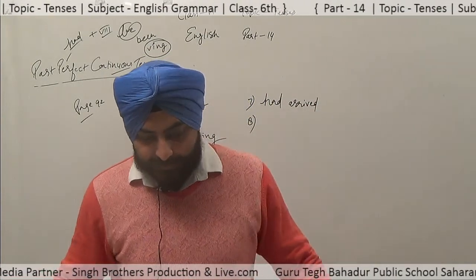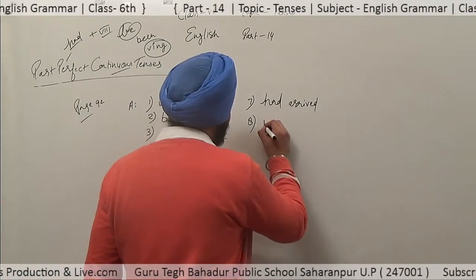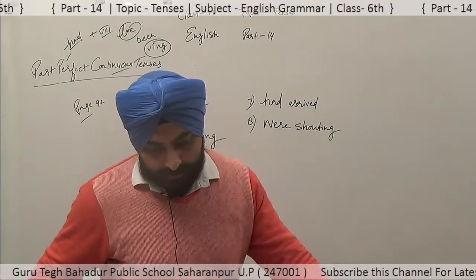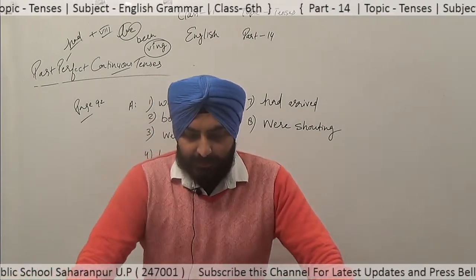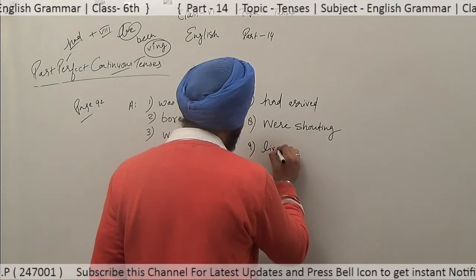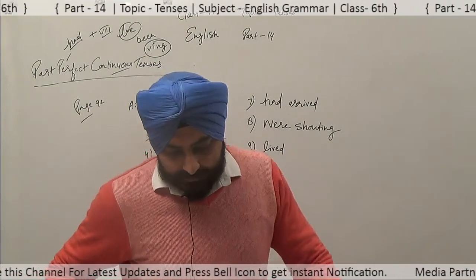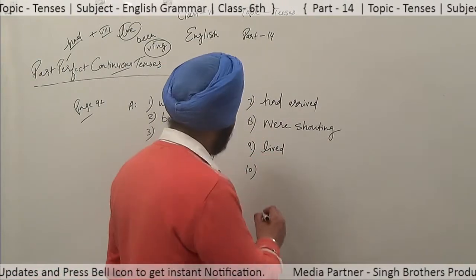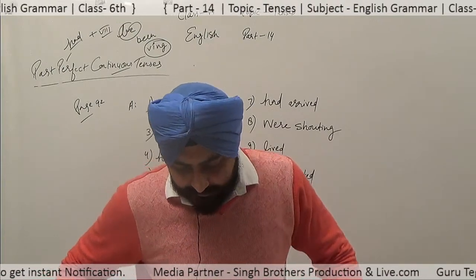Eighth: 'Students at the gate' — past continuous, plural subject, so 'were' plus -ing: were shouting. The students were shouting when the thief was being chased. Ninth: 'Anil's family dash live in Goa till last year' — simple past, so 'live' becomes 'lived.' For negative it would be 'did not live.' Tenth: 'Rita dash collect shells before she went for a swim' — past perfect: had collected. Rita had collected shells before she went for a swim.